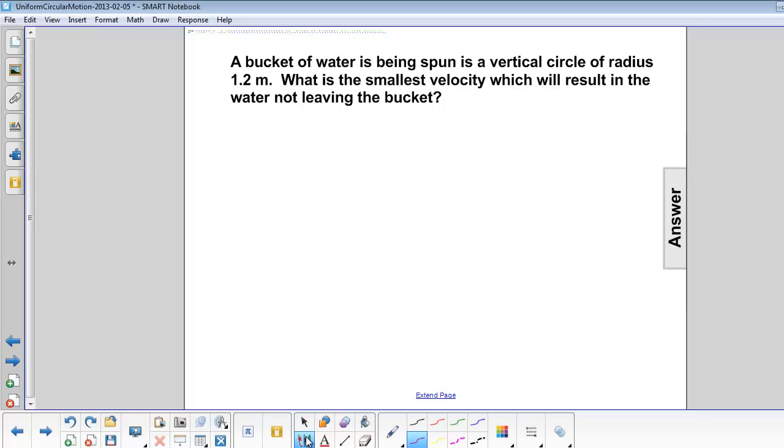A bucket of water is being spun in a vertical circle of radius 1.2 meters. What is the smallest velocity which will result in the water not leaving the bucket?